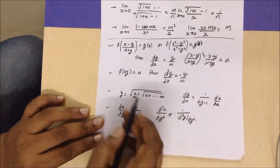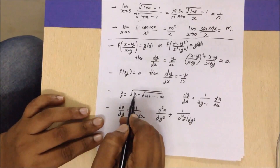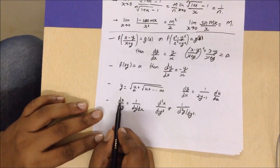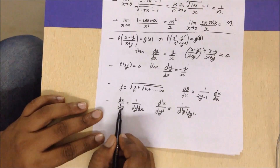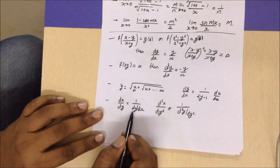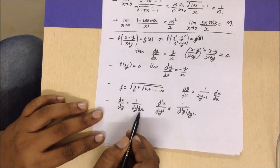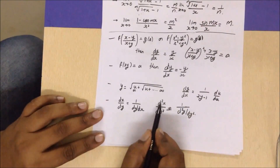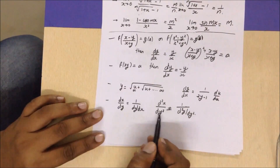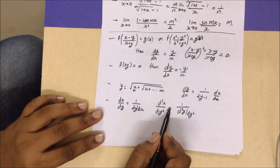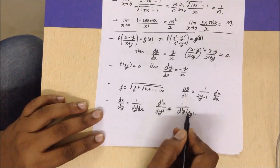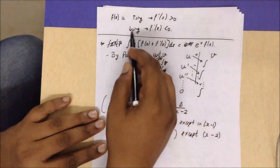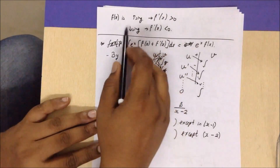Remember this important rule: dx/dy equals 1 upon dy/dx. However, this does NOT imply that d²x/dy² equals 1 upon d²y/dx².